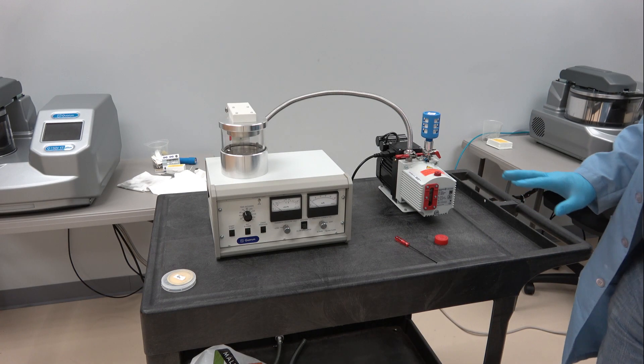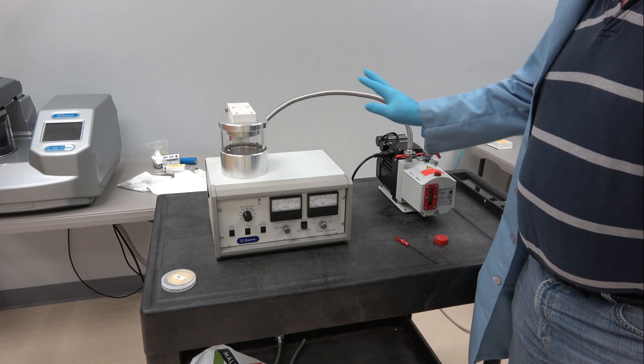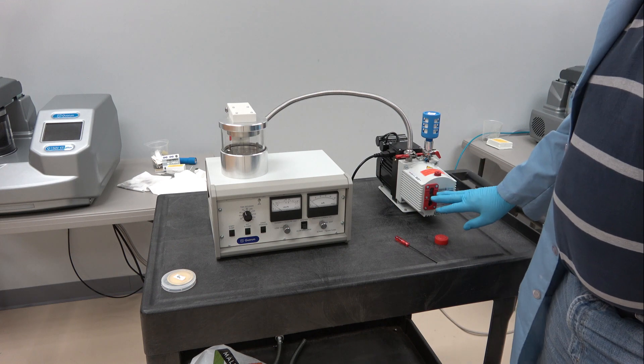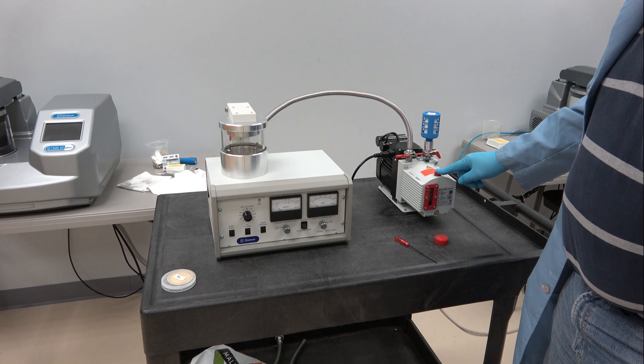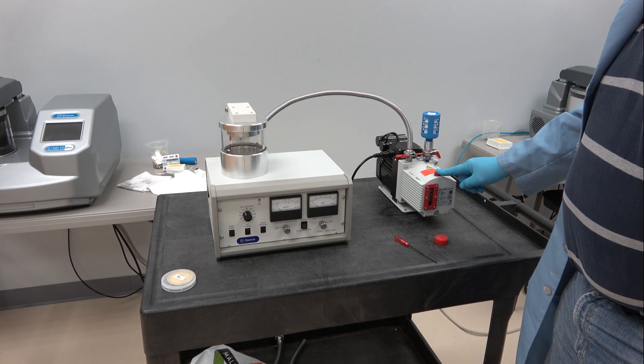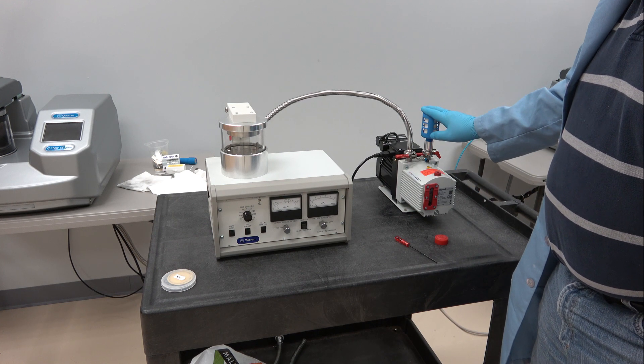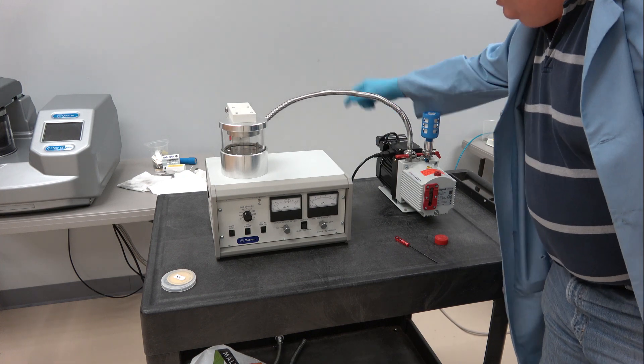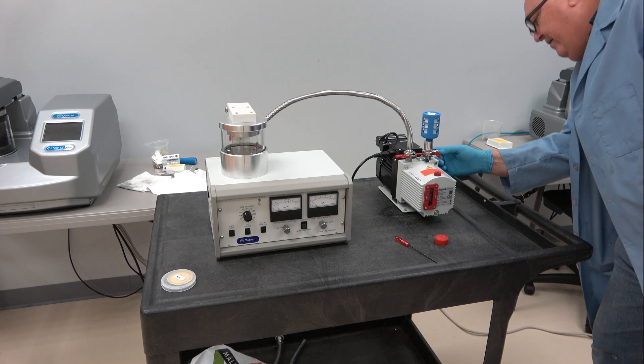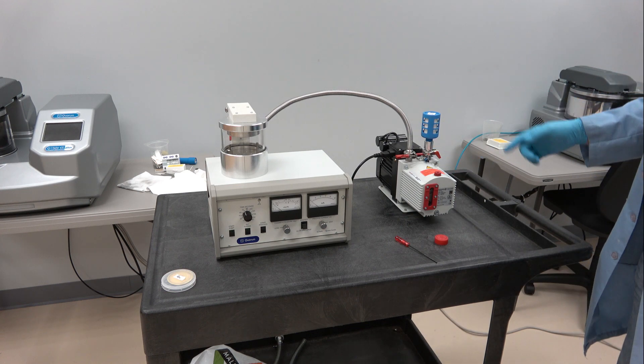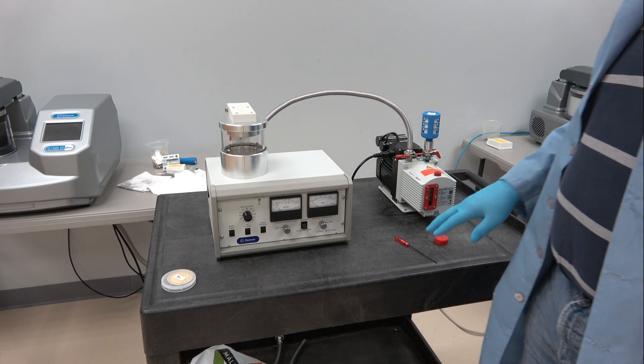I went ahead and connected everything up. Put oil in the rotary pump, this is the fill port for that. Put on the exhaust filter. Plugged this into the back of the coater. Make sure that we'll have to check if the on-off switch is actually in the on position.